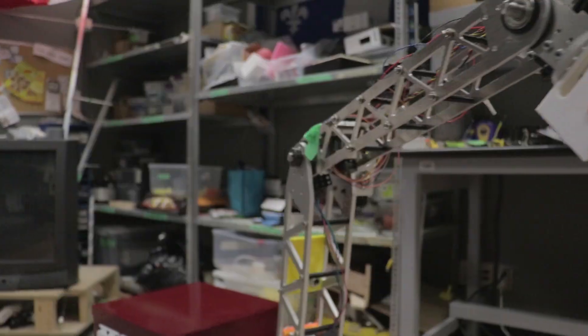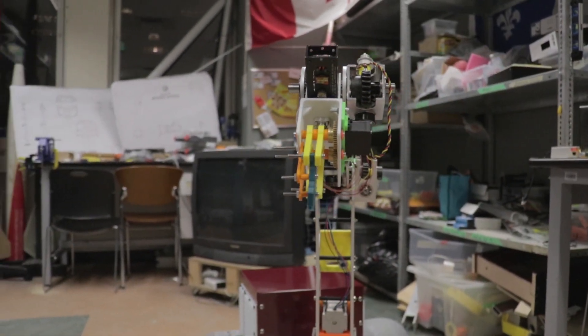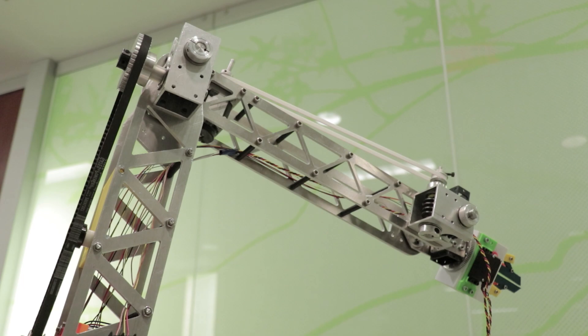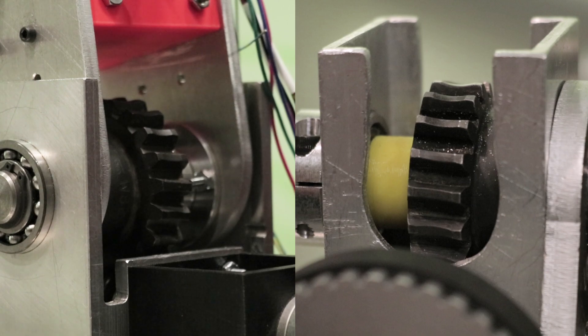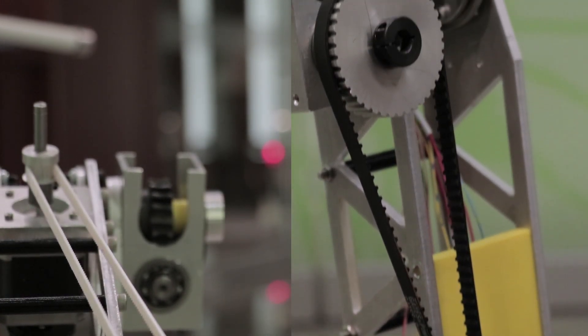The arm has five degrees of freedom and is made with aluminum plates for ease of manufacturing and assembly. It features worm gears to retain its position when not driven and timing belts are also used to reduce torque requirements.